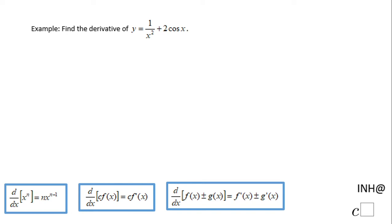Welcome or welcome back. I need help at C squared. In this example, we need to find the derivative of y equals 1 over x squared plus 2 cosine x.